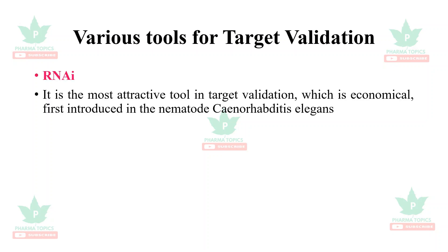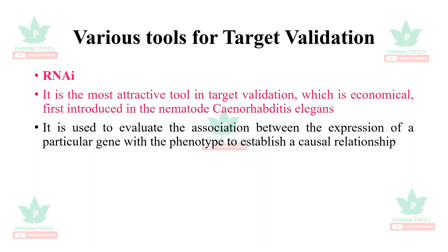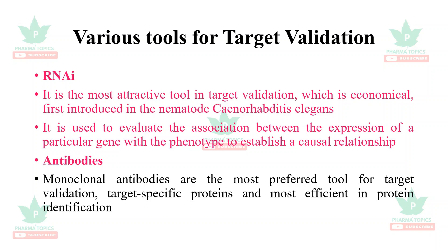RNA interference is the most attractive tool in target validation, which is economical. It was first introduced in the nematode Caenorhabditis elegans (C. elegans). It is used to evaluate the association between the expression of a particular gene with the phenotype to establish a causal relationship.